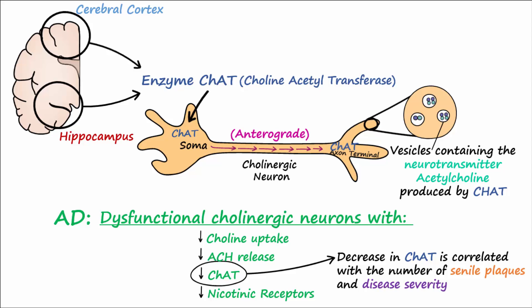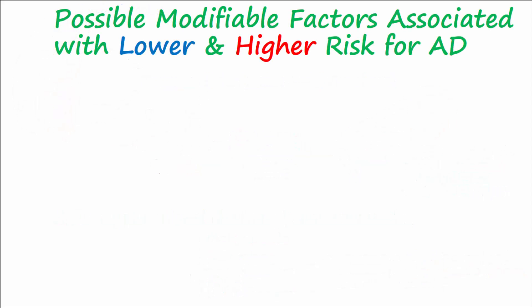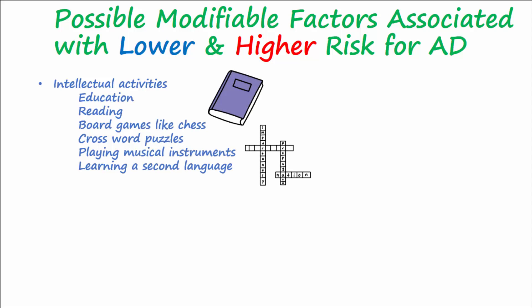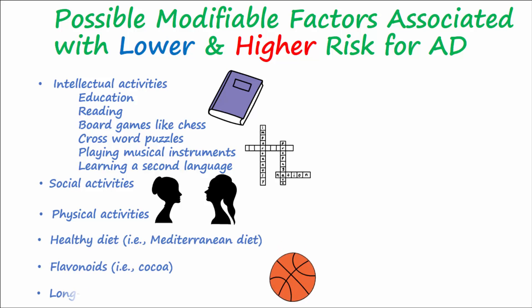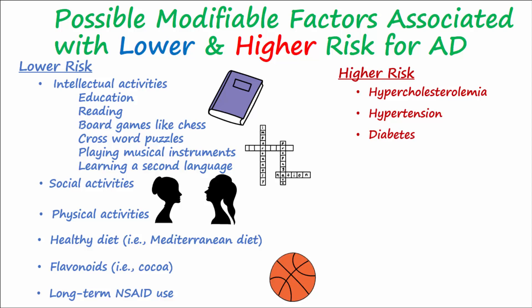As of yet, there is no definitive evidence for measures that can prevent AD. Epidemiological studies have, however, suggested relationships between intellectual, social, and physical activities as well as certain diets, foods, and drugs that may lower the risk for AD. There are also modifiable risk factors believed to increase risk, including hypercholesterolemia, hypertension, diabetes, and smoking.